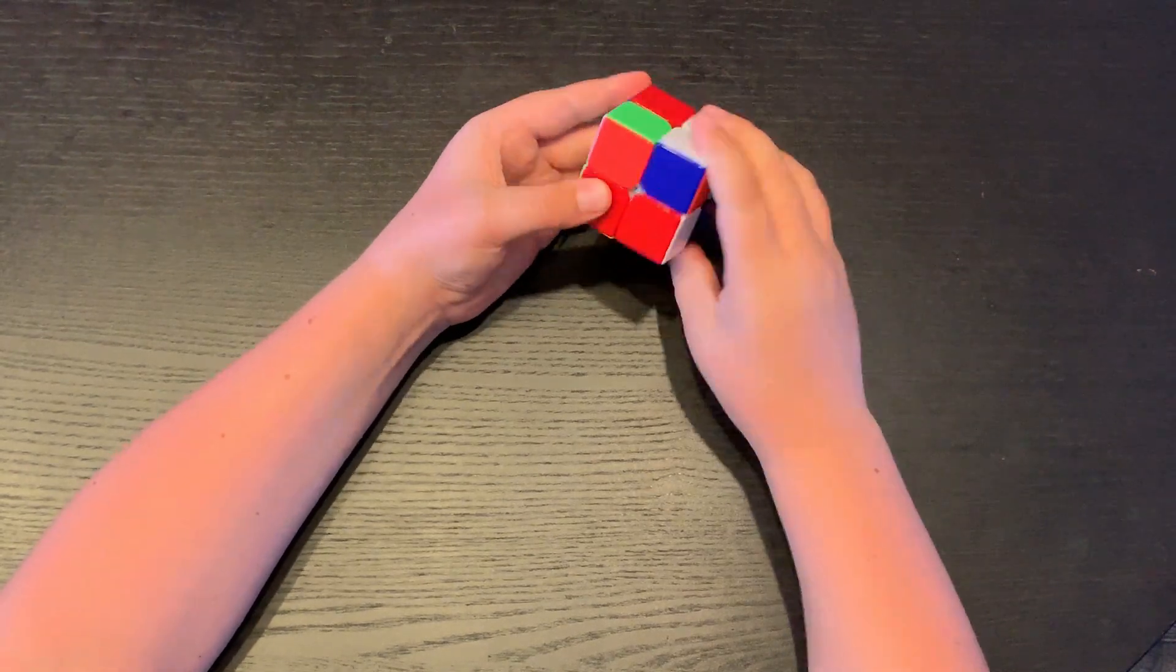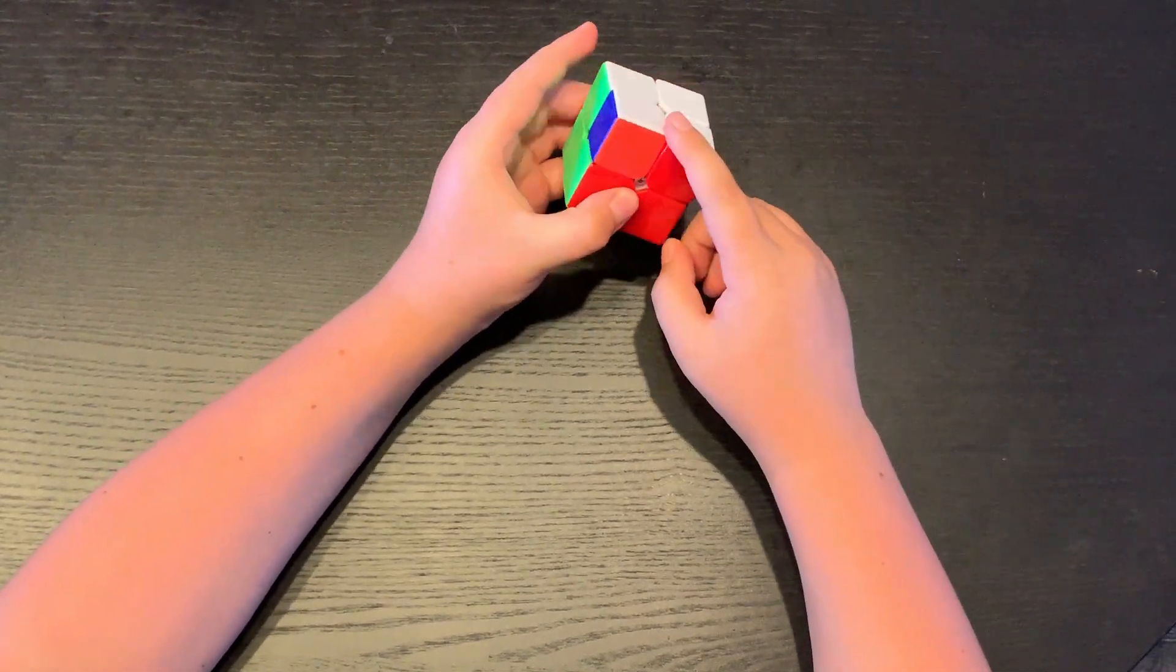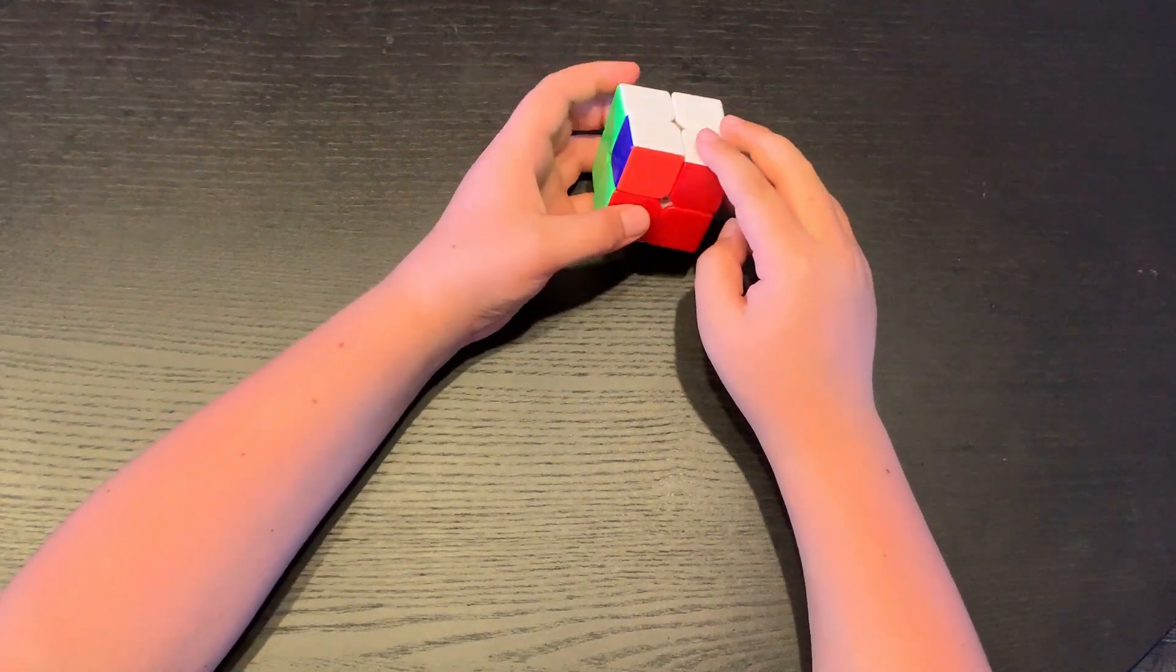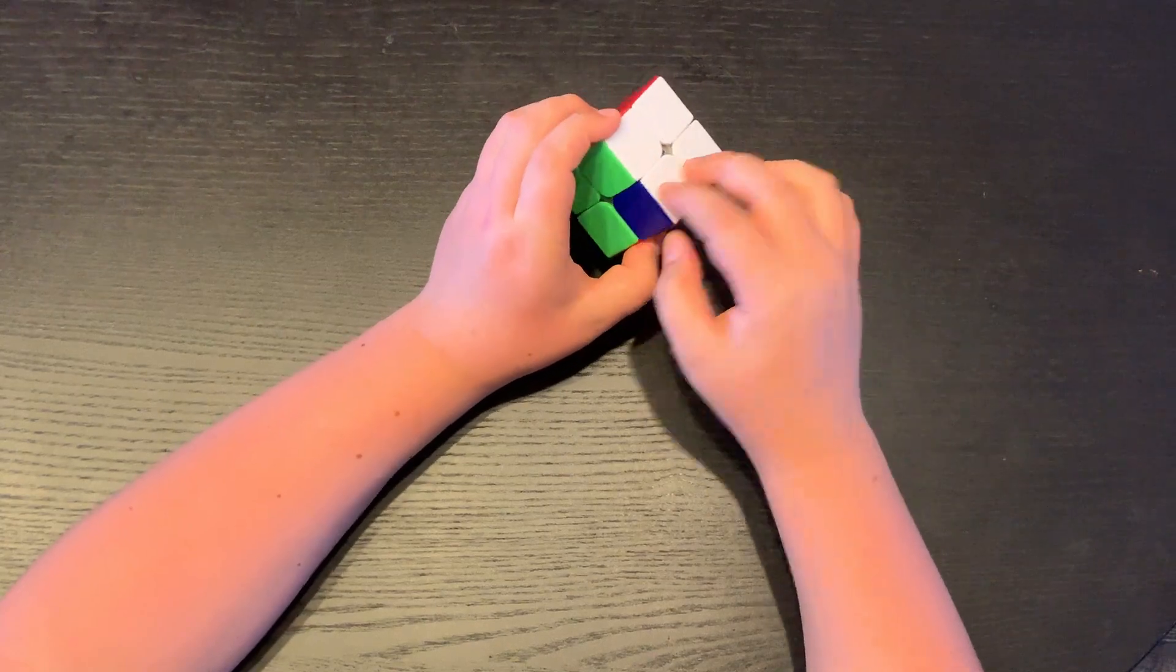And you may have a situation like this. So this is a really rare situation, it's called an N perm. But you can just do one T perm that will make the two corners matching, and then these two need to be switched.